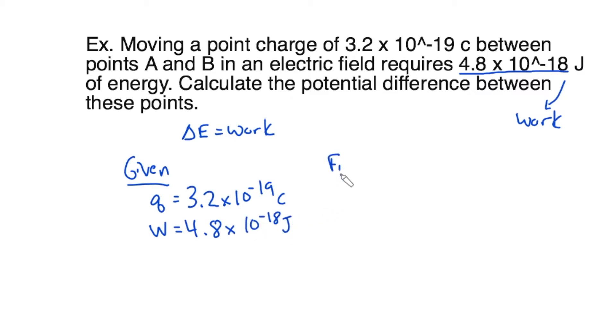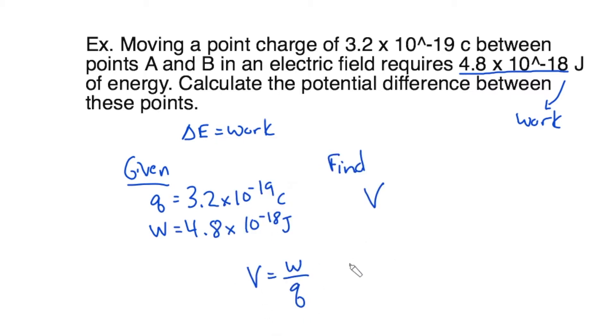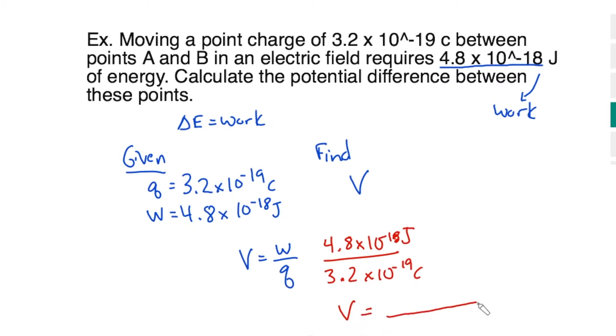We're also given W, which is 4.8 times 10 to the minus 18th Joules, and we want to find big V. So big V equals W over Q. We could plug in 4.8 times 10 to the minus 18th Joules, divided by 3.2 times 10 to the minus 19th, and we'll have a voltage, which you are going to solve for right now, and tell me the answer in volts.